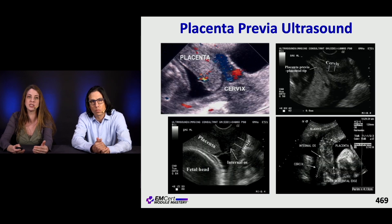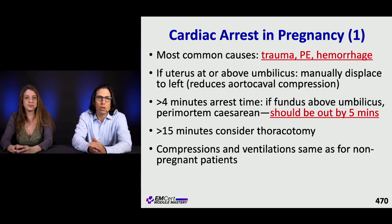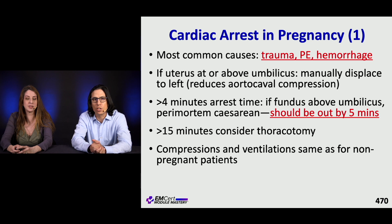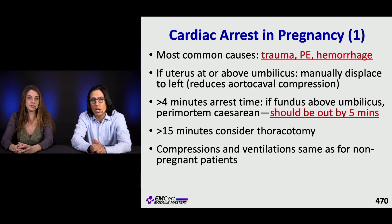This slide shows examples of placenta previa. Regarding cardiac arrest in pregnancy, the most common causes are trauma, PE, and hemorrhage. If the uterus is at or above the umbilicus — corresponding to about 20 weeks gestational age — manually displace it to the left to reduce aortocaval compression and improve maternal circulation. If there is greater than four minutes of cardiac arrest and the fundus is above the umbilicus, that is an indication for perimortem C-section, aiming to have the baby delivered by five minutes. Consider thoracotomy if greater than 15 minutes. Compressions and ventilations are the same as for non-pregnant patients.